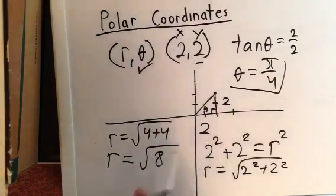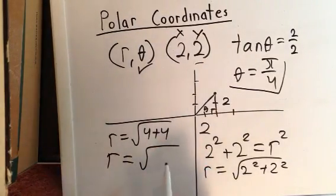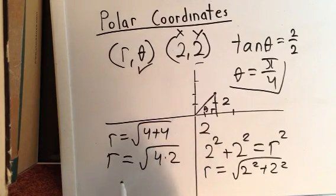Or we can just write 8 as 4 times 2, so we can take out the 2. So r would be equal to 2√2.